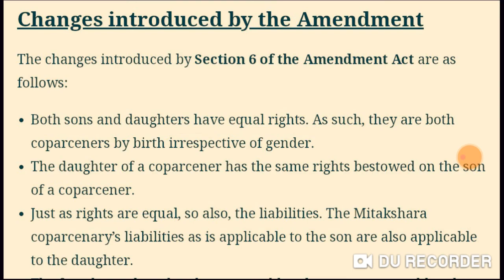By birth, they become coparceners, irrespective of gender — whether son or daughter. So the first obligation was only for male heirs, and then it was amended. The daughter of a coparcener now has the same rights bestowed on the son of a coparcener. If there is any daughter or girl, they have the same rights.